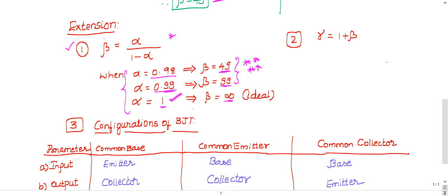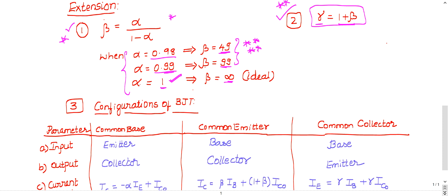To summarize the key relations: beta equals alpha divided by (1 minus alpha), and gamma equals (1 + beta). Please remember these two relations — they may also be asked in the ISRO exam. As an exercise, try to find the relationship between alpha and gamma by combining these two equations — it's simple.